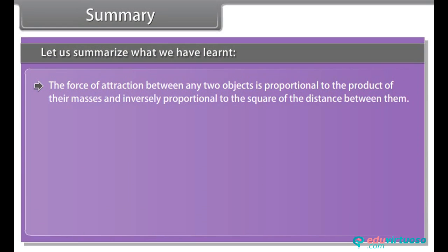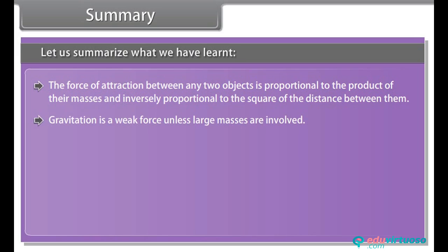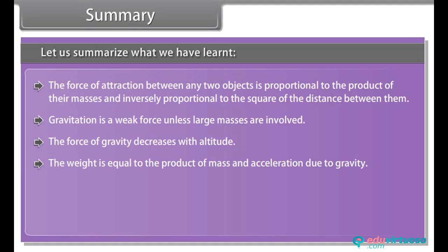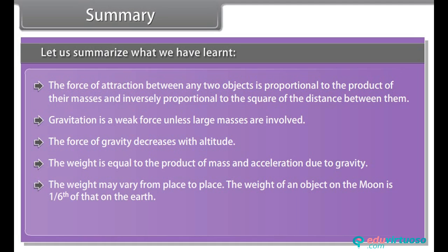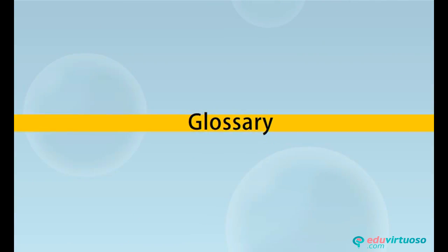Summary: the force of attraction between any two objects is proportional to the product of their masses and inversely proportional to the square of the distance between them. Gravitation is a weak force unless large masses are involved. The force of gravity decreases with altitude. Weight equals mass times acceleration due to gravity, and the weight of an object on the moon is one-sixth of that on earth. When objects are immersed in fluid they exert a force of buoyancy.